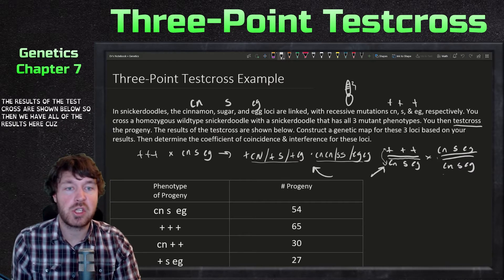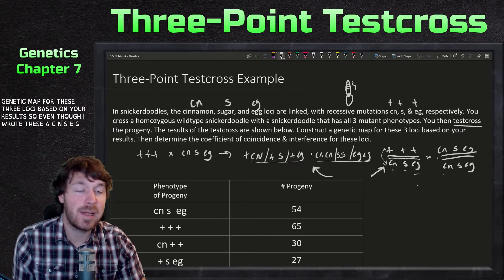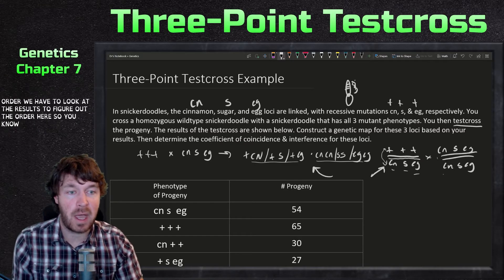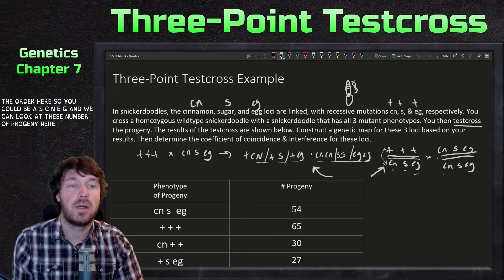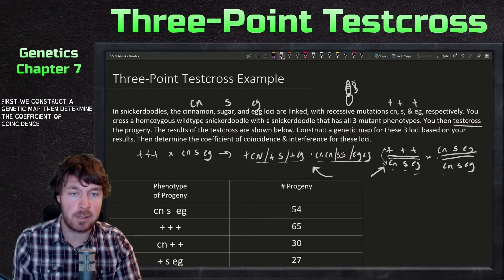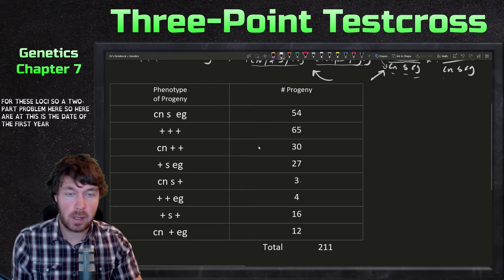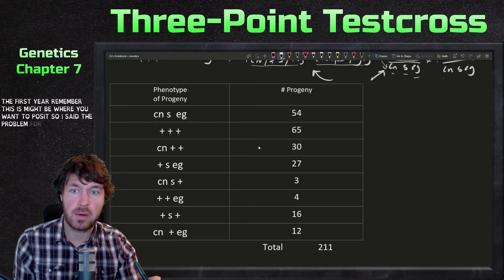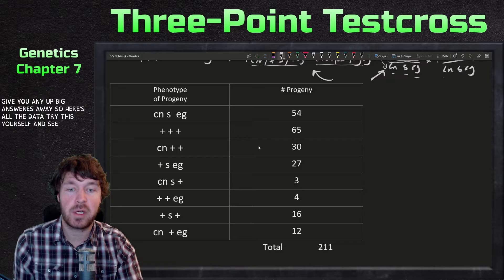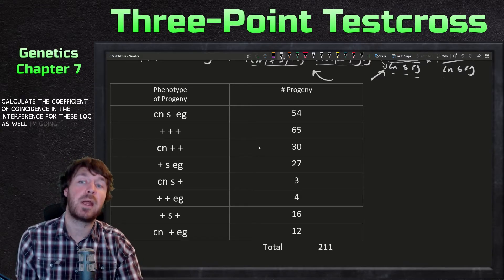The results of the test cross are shown below. Our task is to construct a genetic map for these three loci based on the results. Even though I wrote these as cn, s, eg, that's not necessarily the actual order — we have to look at the results to figure that out. It could be s cn eg. We also need to determine the coefficient of coincidence and interference for these loci. Try the problem yourself before I walk through it.